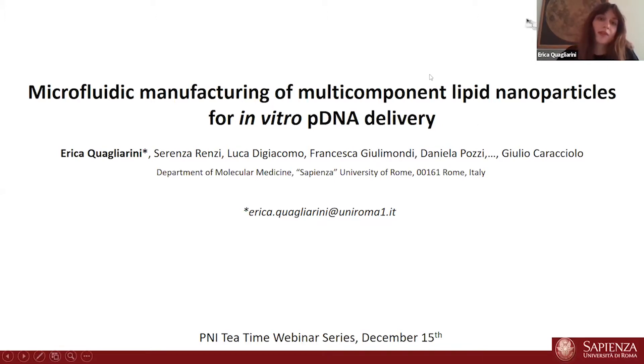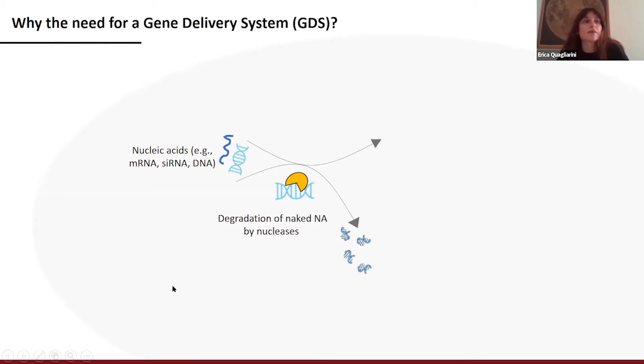I'm very happy to have this opportunity to talk about my work that, as Edward already said, is about the production of a multi-component lipid nanoparticle generated by a microfluidic device for the delivery of plasmid DNA in vitro. So let's dive in. First of all, why the need for gene delivery systems? As I suppose many of you know, to exert their function properly, nucleic acids need to reach their target tissue without any alteration of their complex structure.